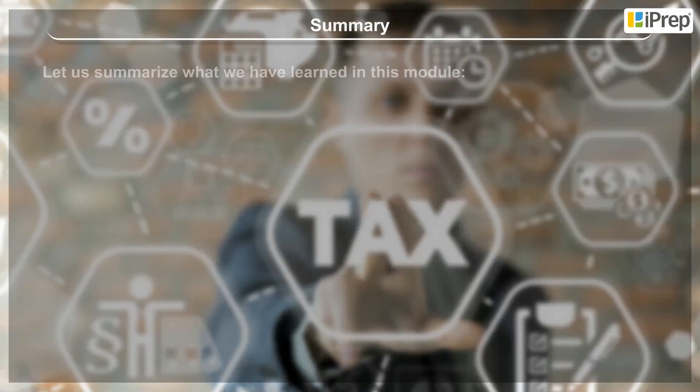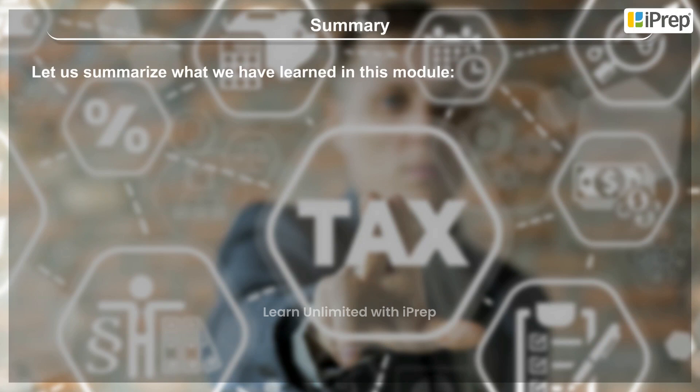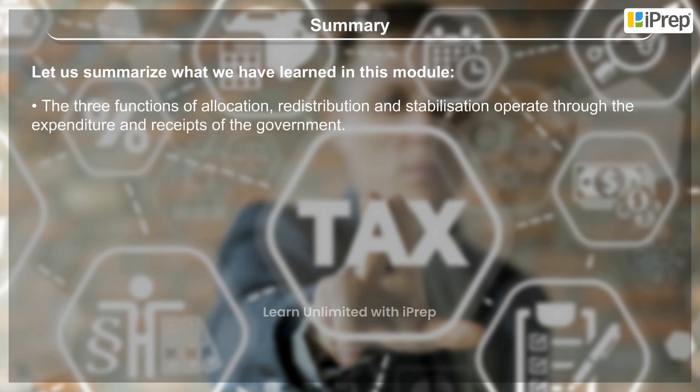Let us summarise what we have learnt. The three functions of allocation, redistribution and stabilisation operate through the expenditure and receipts of the government.